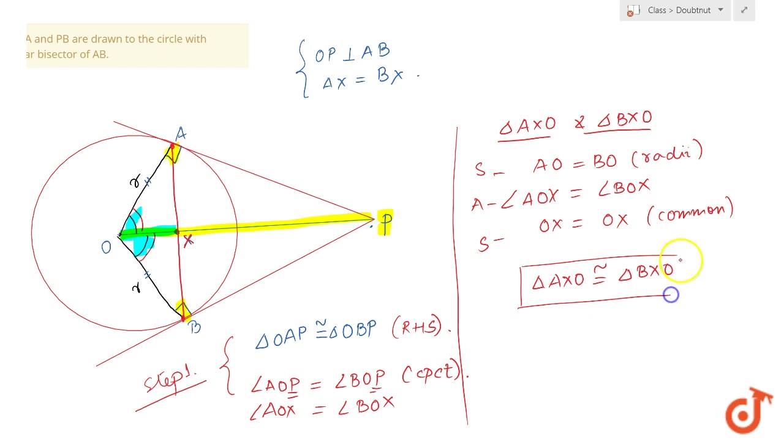If these two triangles are congruent, the first thing is that AX is equal to BX. This is my one part proved. Next, I can say that angle AXO must be equal to angle BXO.